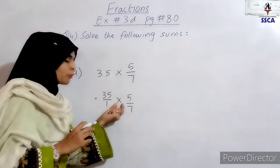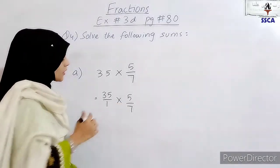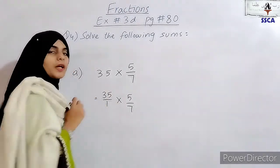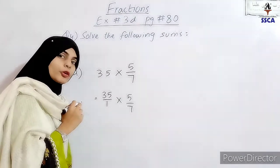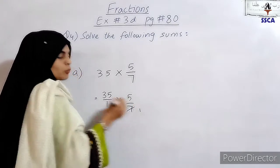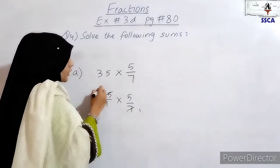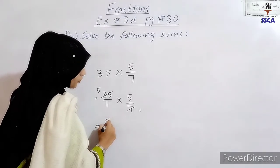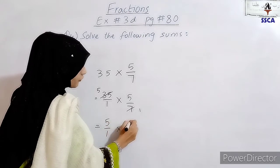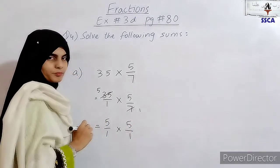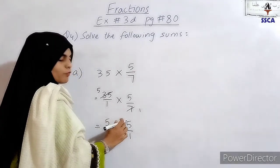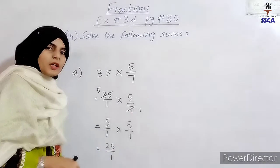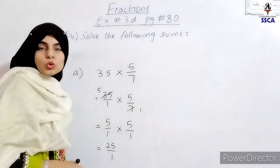We cancel: 5 goes into 35 seven times, and 7 goes into 7 once. So numerator becomes 5 times 1, and denominator becomes 1 times 1. We multiply: 5 times 5 is 25. The answer is 25.